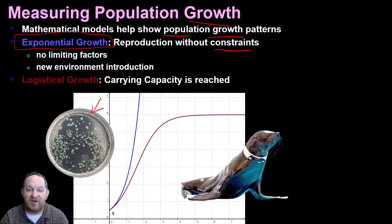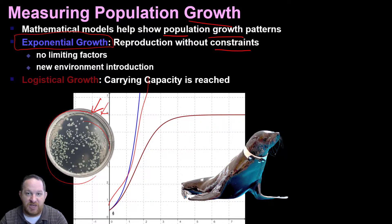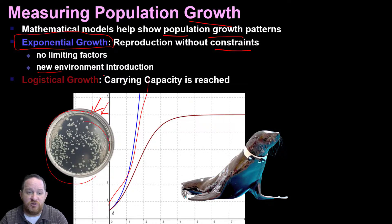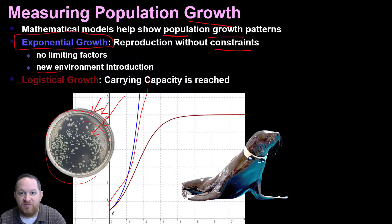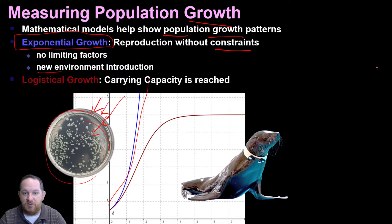Without any limiting factors — in this case, the only limiting factor is the amount of agar in the plate or the plate itself — this bacteria is going to grow out of control exponentially, and you're going to see a major takeoff. We see this often when a new environment is introduced. You take a bacteria, you plop it on a buffet of macromolecules for it to enjoy, and that bacteria is going to take off and grow. So you take a non-native species and introduce it into a population, and without limiting factors, it's going to grow like crazy.